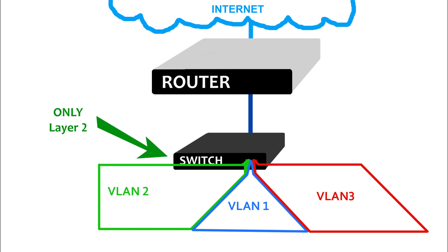In other words, this Layer 2 switch cannot pass traffic between VLANs. If a device in VLAN 2 wants to communicate with another device on your network that is located in VLAN 3, in this example, it's all out of luck — it's not happening.